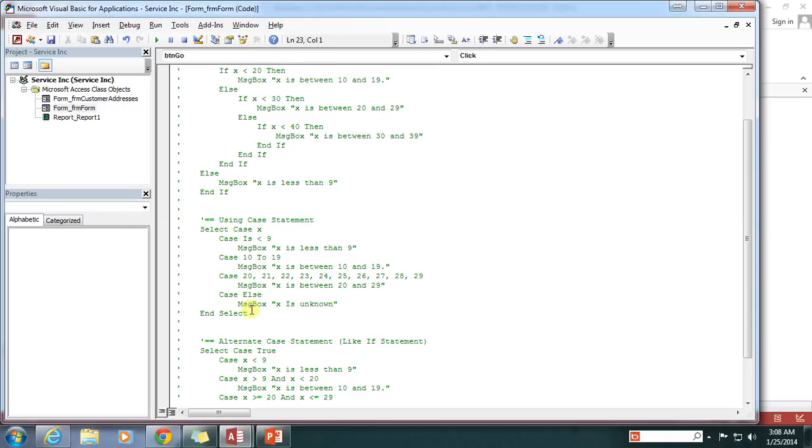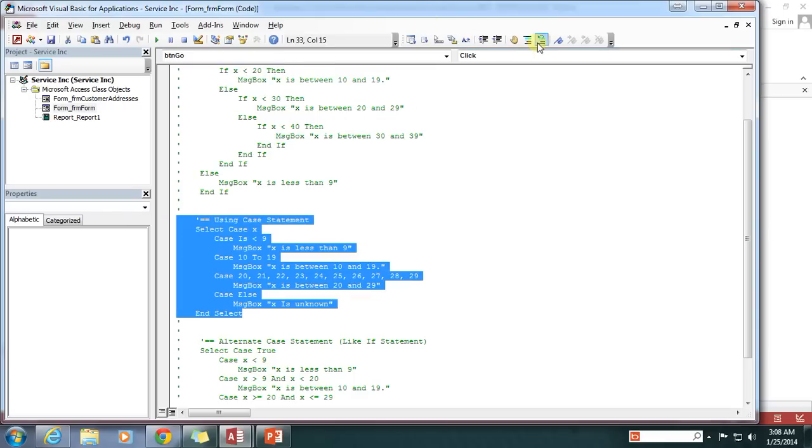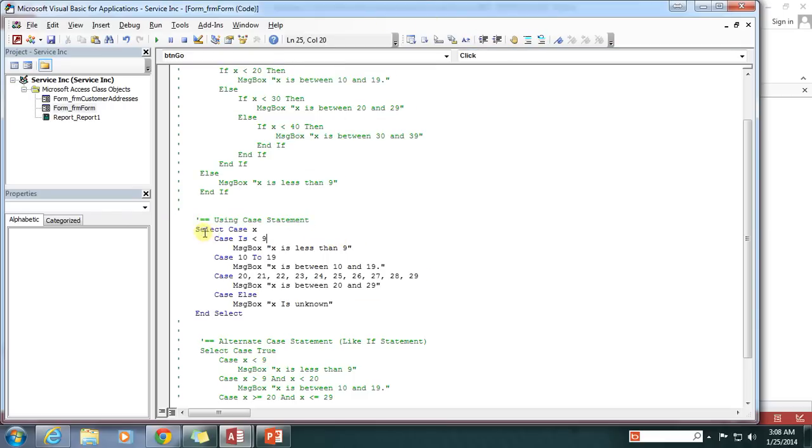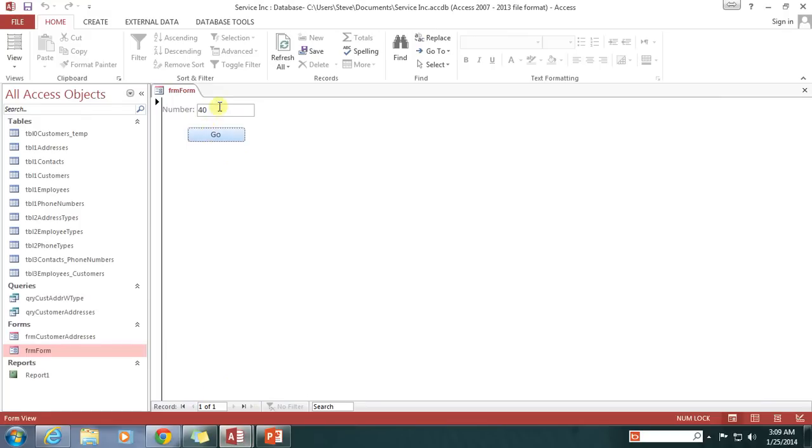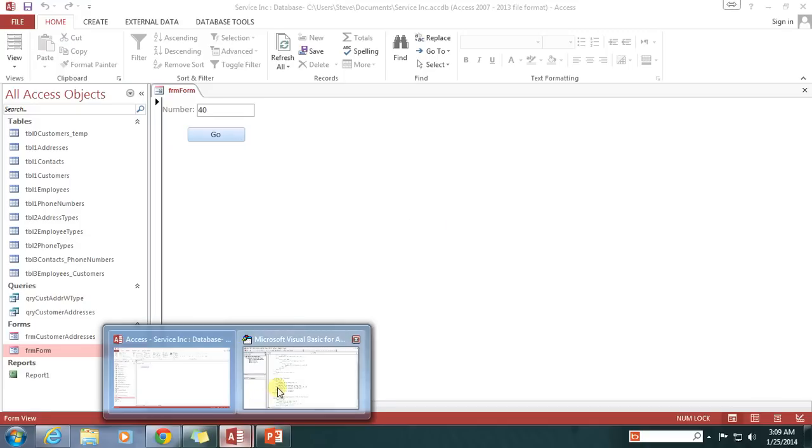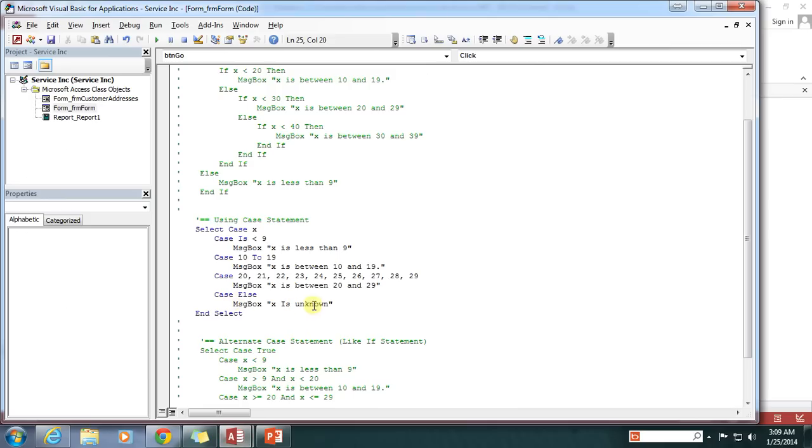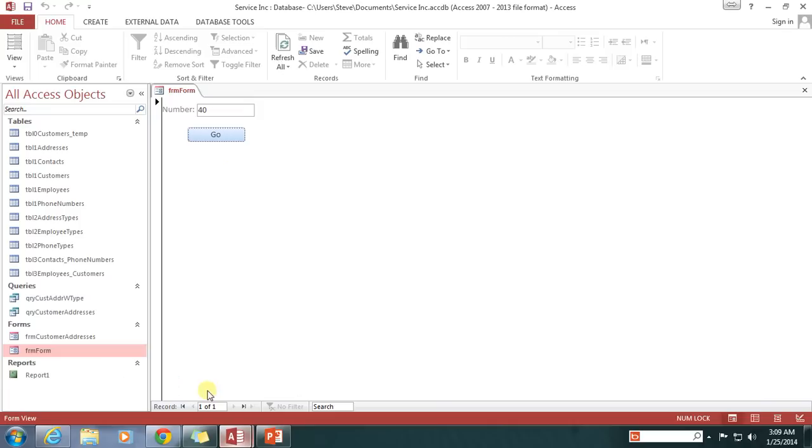Let's go on down to that select case statement that we built. Select case x. X is less than 9. Yada, yada, yada. I think we had a pretty good explanation on the slide. Let's go ahead and run this. Let's try, well, let's try 40. X is unknown. That's because it caught that else block down here, which we accounted for any other possibilities that we couldn't find up in here.